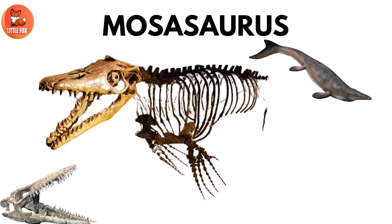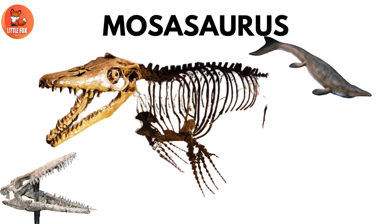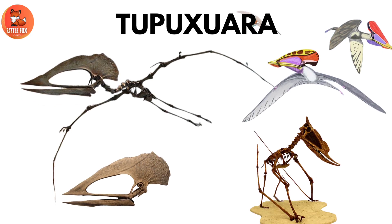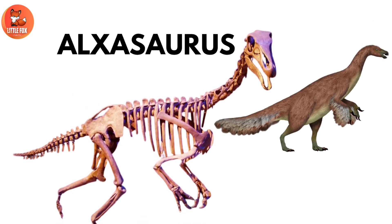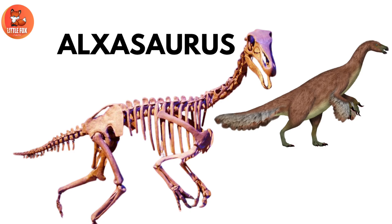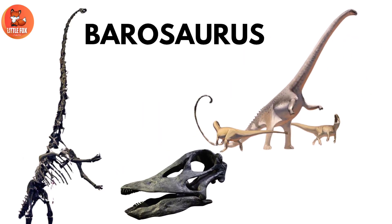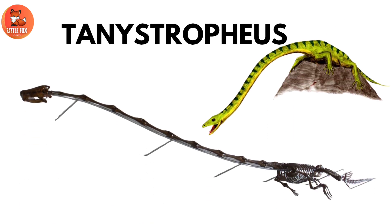Number 20: Mosasaurus. Number 21: Tupituera. Number 22: Alzaosaurus. Number 23: Barosaurus. Number 24: Tanistrophias.